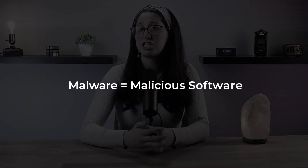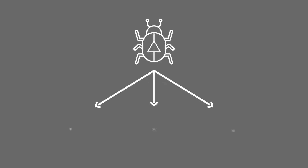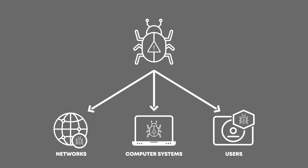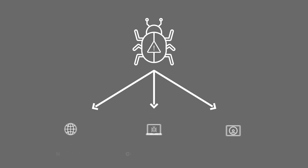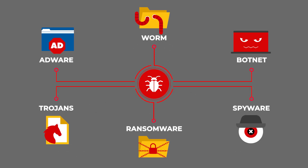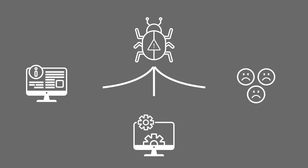Before we get into cloud computing in relation to malware, we first need to understand what malware actually is. Malware, which is short for malicious software, refers to a broad category of software designed with the intent to harm or exploit computer systems, networks, or even users. This includes viruses, worms, trojans, ransomware, spyware, and other types of malicious code. Malware can disrupt operations, compromise sensitive information, and wreak havoc on both individual users and organizations.